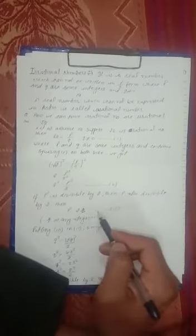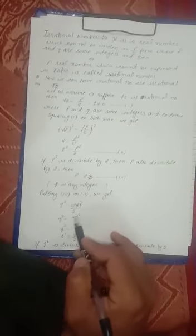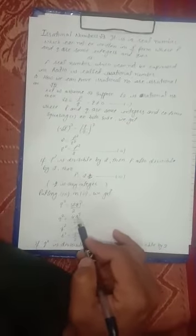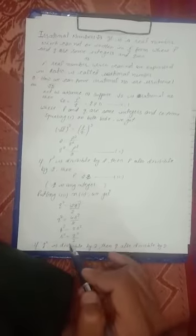Putting p is equal to 2r, where r is any integer, putting 3 in 2, we get q square is equal to 2r square upon 2. After solving, q square is equal to 4r square upon 2. After solving I get 2r square is equal to q square. It means if q square is divisible by 2 then q also divisible by 2.